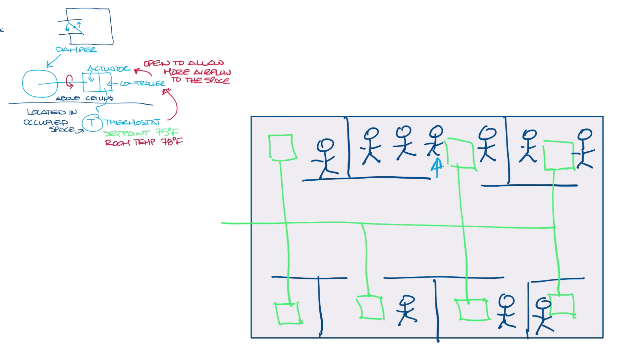Like this one, the VAV box may need to turn up and provide more airflow. In these offices with two people, you may need more airflow there as well. But in this empty office, the VAV box can turn down to minimum because there's no reason to provide extra cooling in there. So VAV boxes provide comfort control into individual zones.